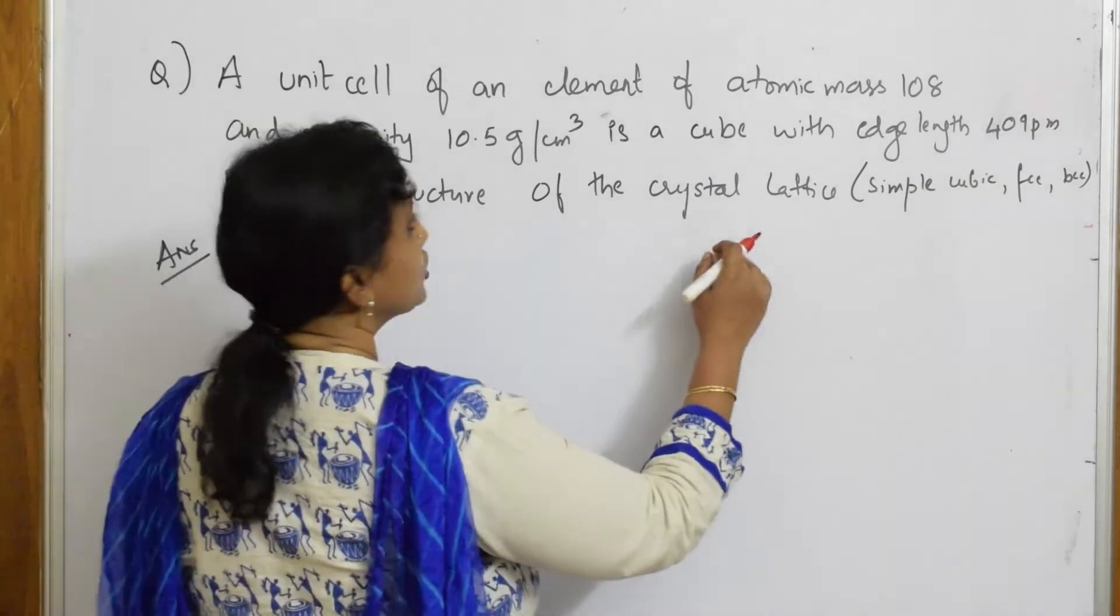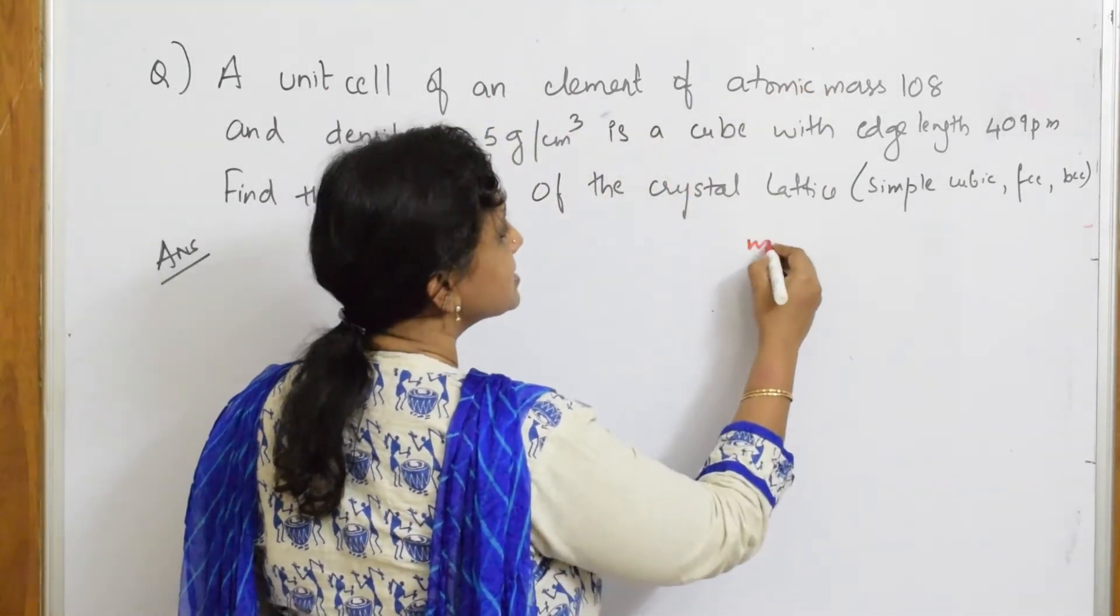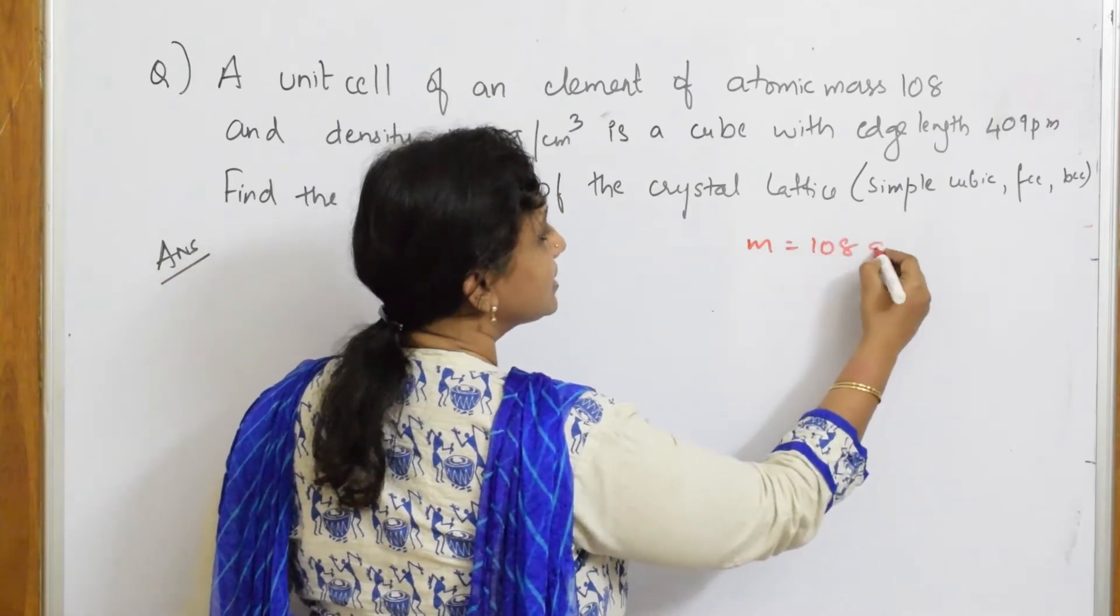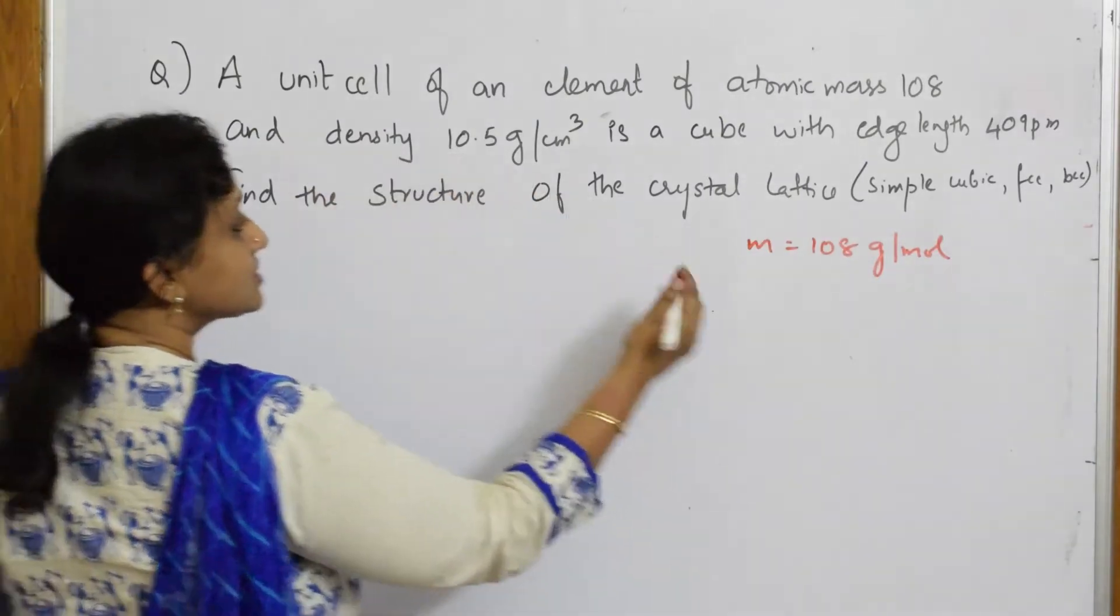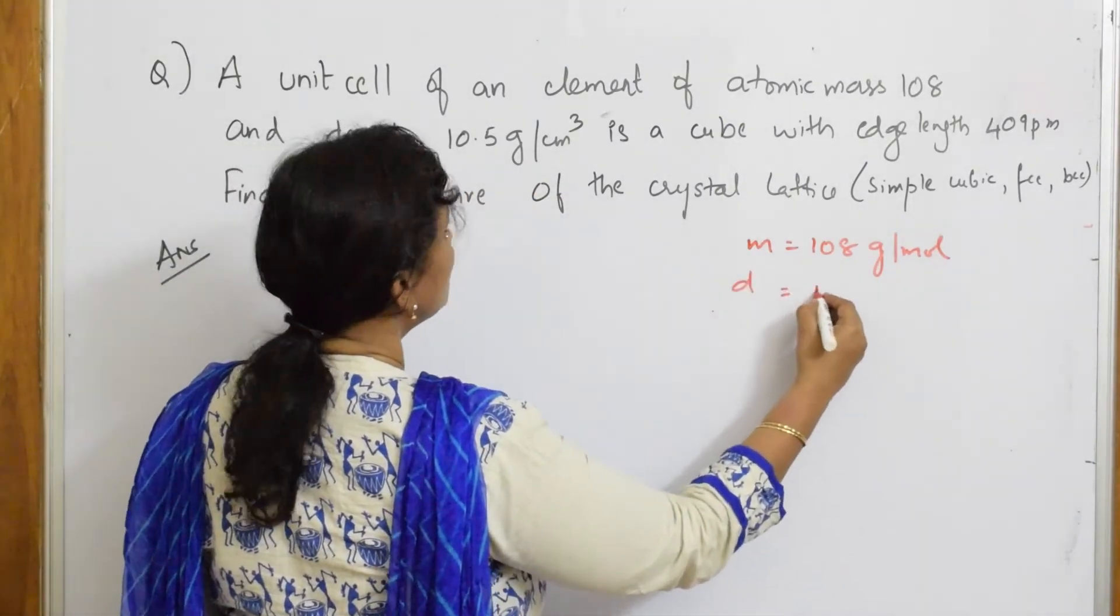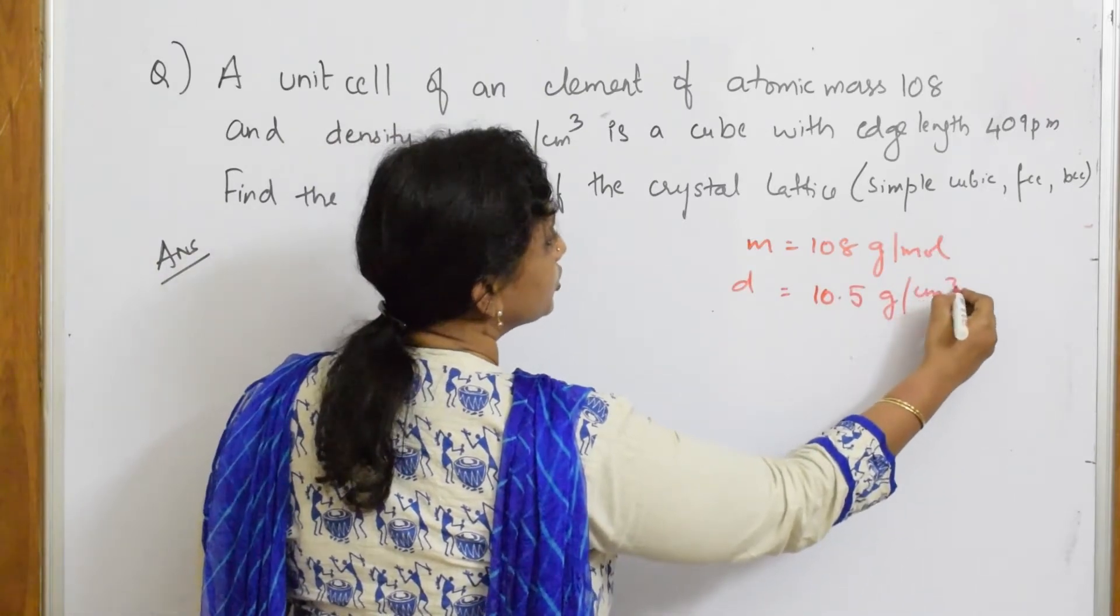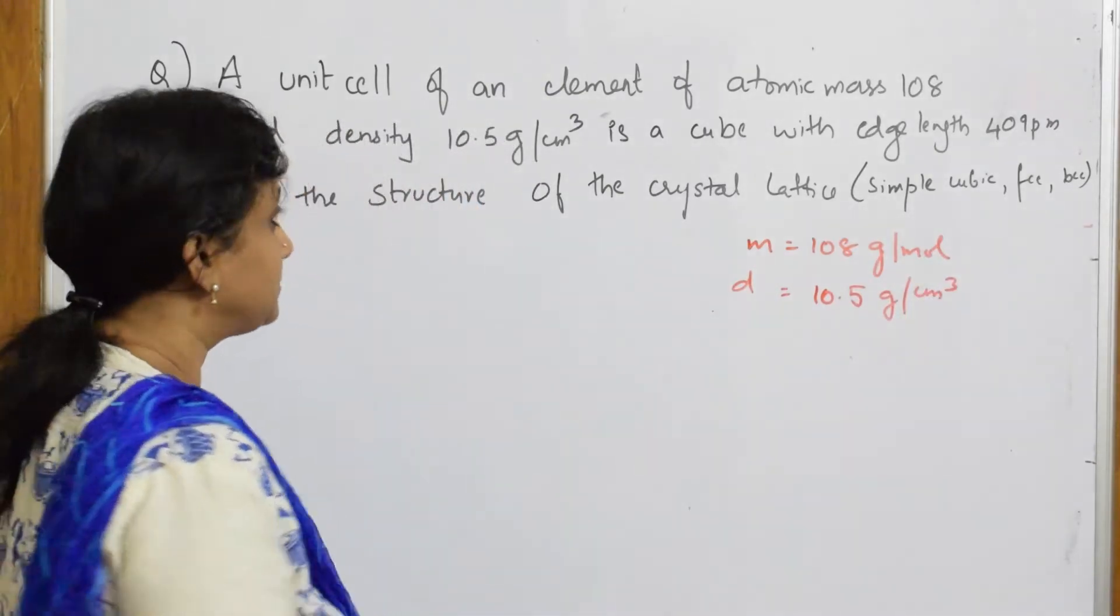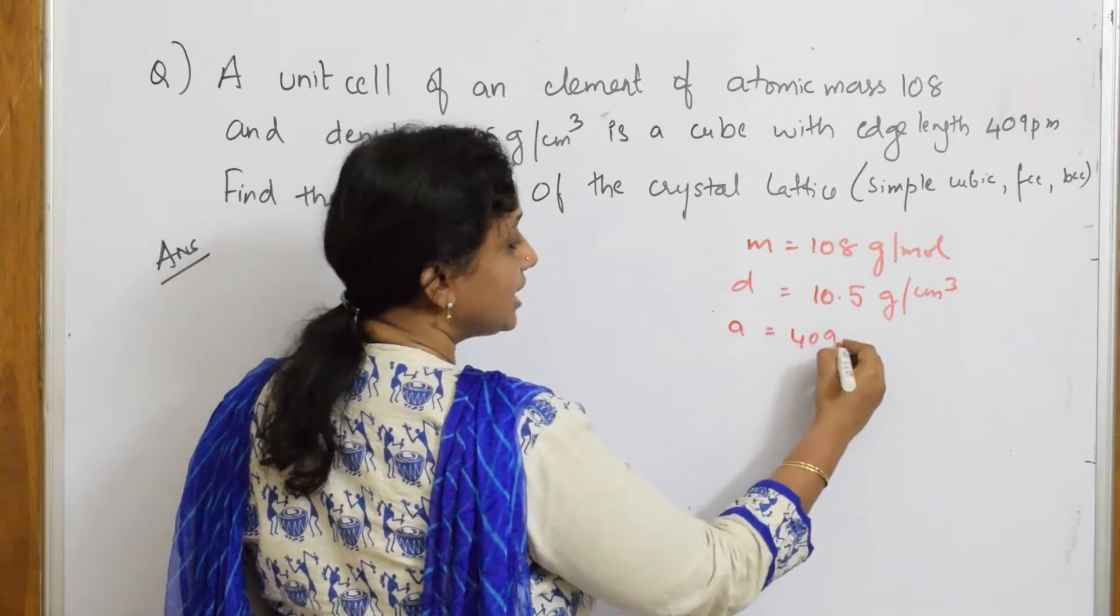Let us write. What is the data given to me? First, a unit cell of an element of atomic mass. Mass is given to me 108. That is mass is always gram per mole. And the density is given to me. Density is equal to 10.5 gram per centimeter cube. Right, not a problem. Edge length a is given to me 409 picometer.